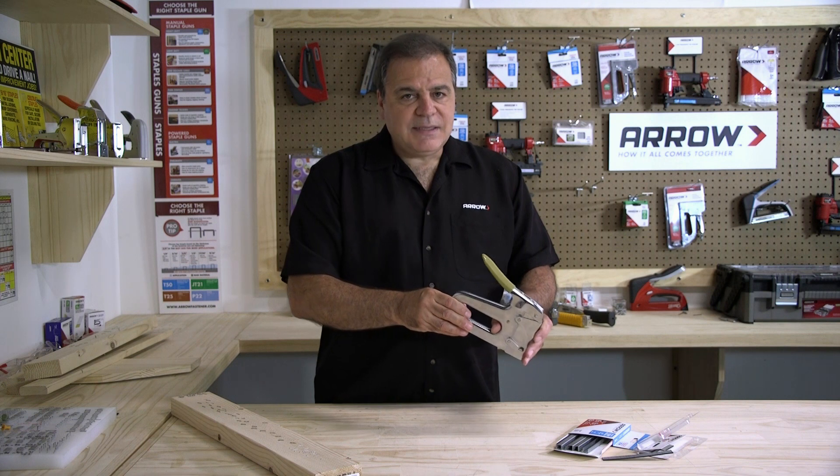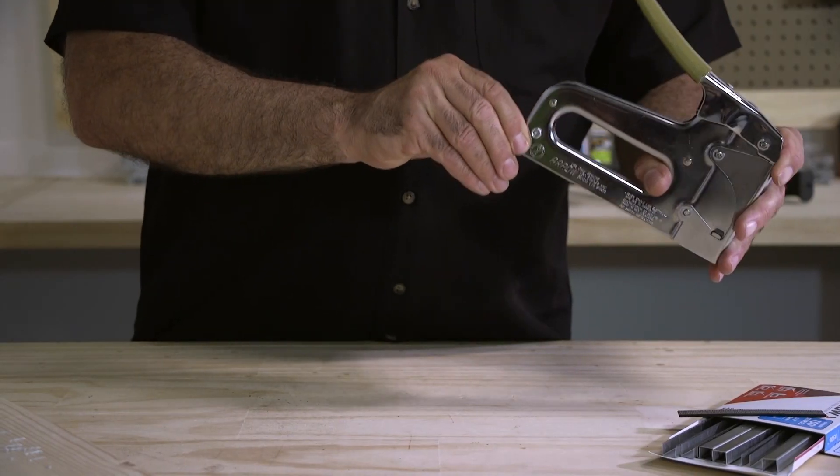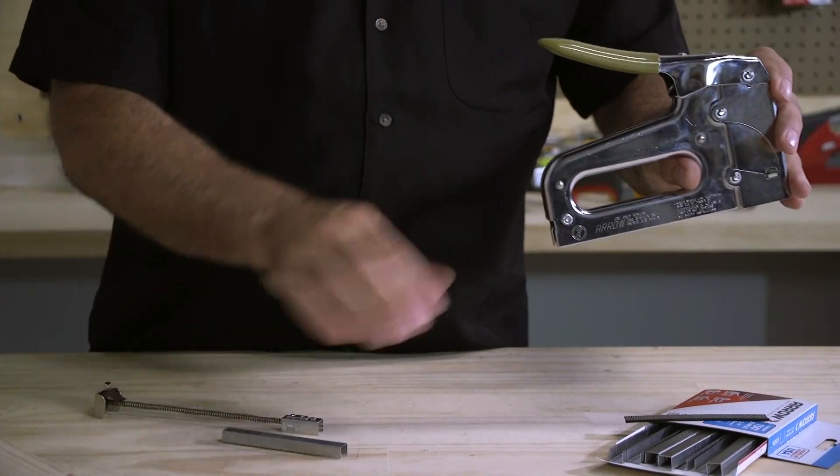If you're going to be firing 18 gauge brad nails from the T50 PBN, first you need to remove the pusher, making sure the magazine is clear of all staples.